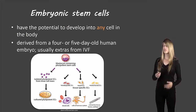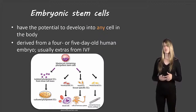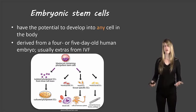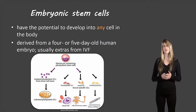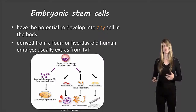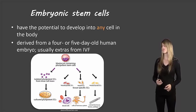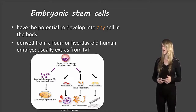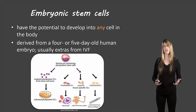Embryonic stem cells can turn into any type of specialized cell — a skin cell, nerve cell, stomach cell, or whatever they need to turn into. They usually come from a four or five day old human embryo, and those are usually extras from in vitro fertilization.